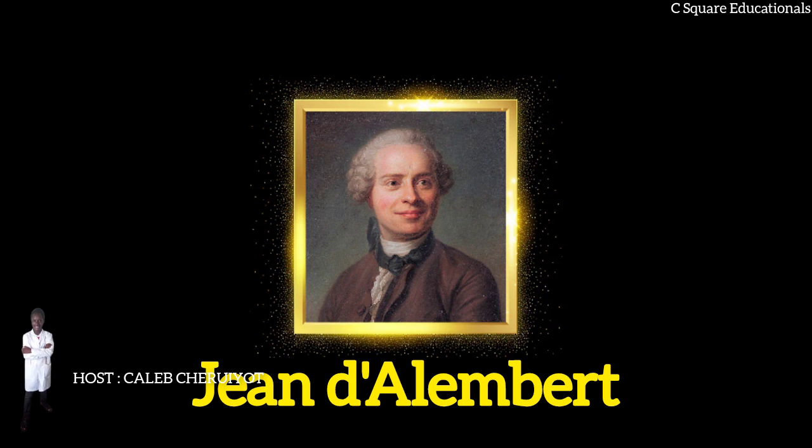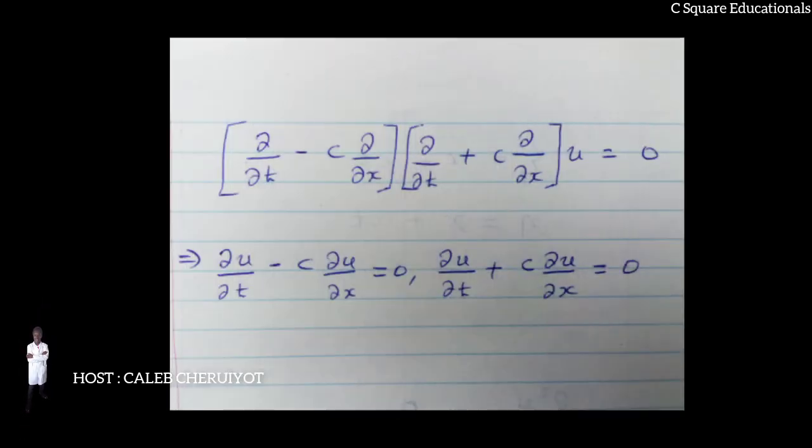Another way to arrive at this result is to factor the wave equation into two one-way wave equations. From this, v must have the form G(x + ct) and from this the correct form of the full solution u can be deduced.